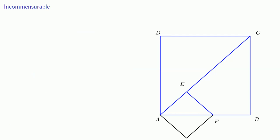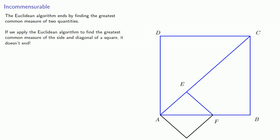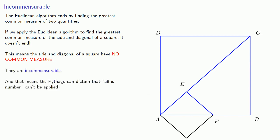And this leads to a rather disturbing conclusion, at least for the Pythagoreans. The Euclidean algorithm ends by finding the greatest common measure of two quantities. But if we apply the Euclidean algorithm to find the greatest common measure of the side and diagonal of a square, it doesn't end. That's because the first time through, when we subtract the side from the diagonal, what we end up with is the side and diagonal of a smaller square. What this means is that the side and diagonal of a square have no common measure — we say they are incommensurable. And that means the Pythagorean dictum that all is number can't be applied.